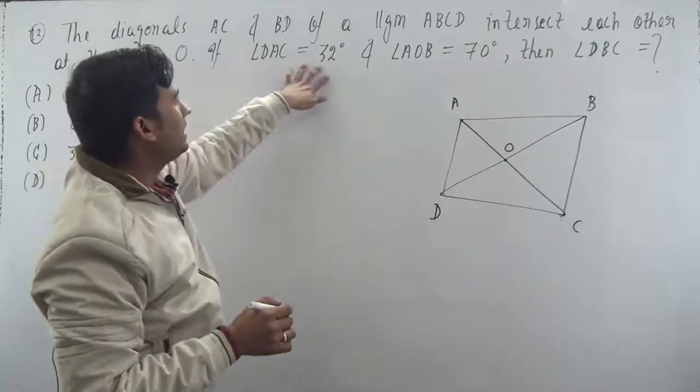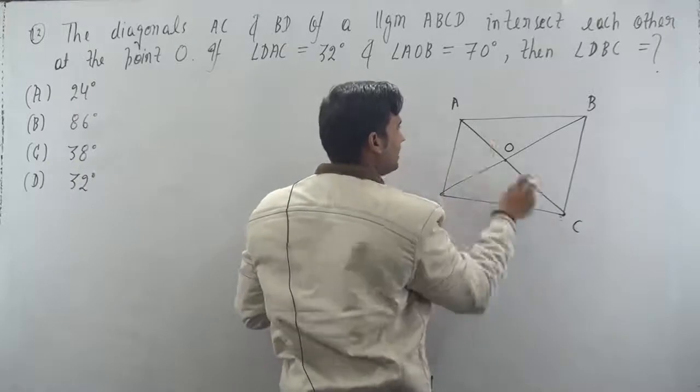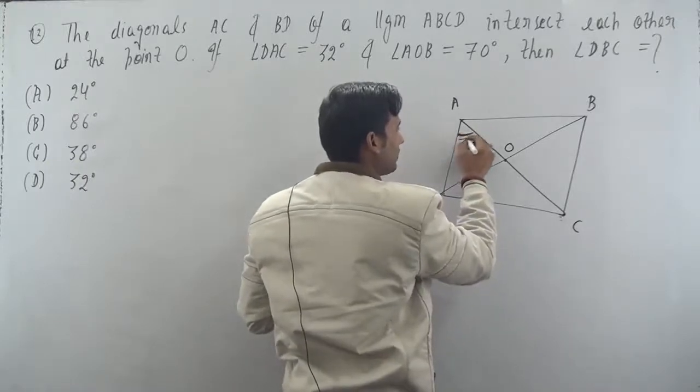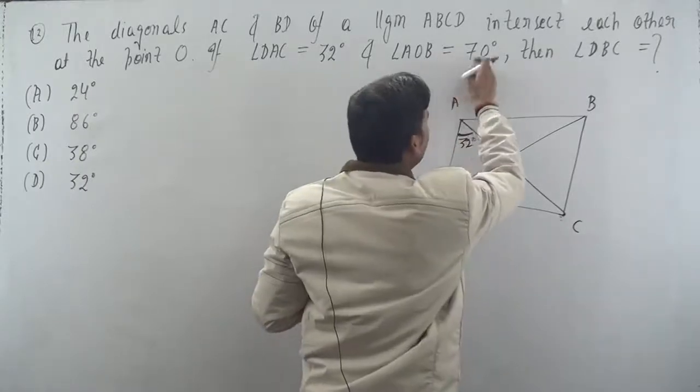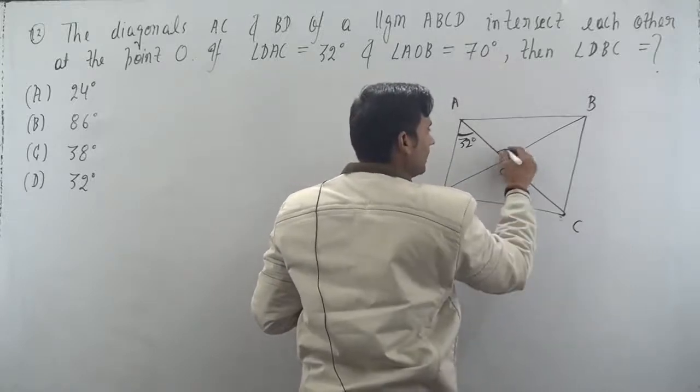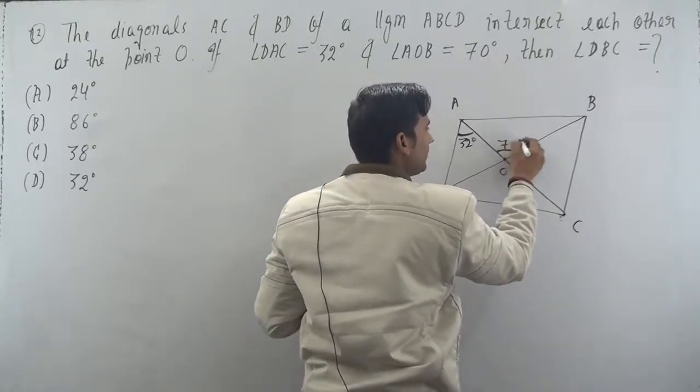If angle DAC is 32 degrees. Now students, angle DAC, this angle is what? 32 degrees. And angle AOB is 70 degrees. So this is point O and this angle is what? 70 degrees.